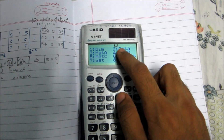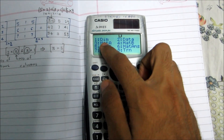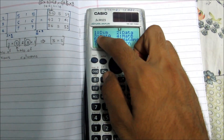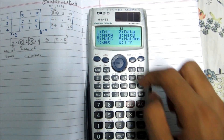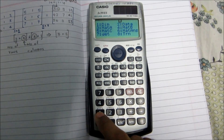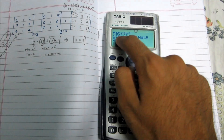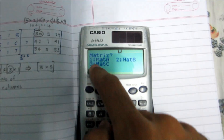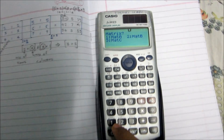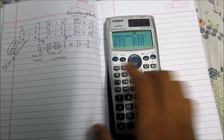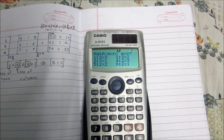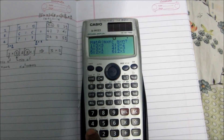'Data' is the data stored in the matrix. If you want to see Matrix A at any time, you press that option. Now we'll store the first matrix by pressing 1 for 'Dim'. We can store three matrices. The first matrix is Matrix A, so let's select that. This matrix is three-by-three, so we'll select three-by-three.